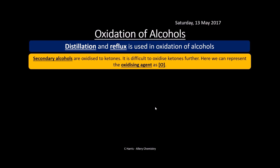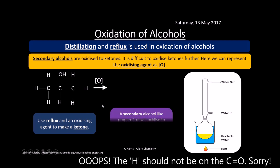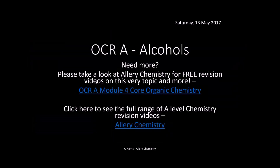Secondary alcohols are oxidized to ketones using reflux with acidified potassium dichromate (represented as [O]). Ketones are difficult to oxidize further, so only one product is formed. For example, propan-2-ol is oxidized to propanone. We use the reflux setup with our mild oxidizing agent represented with [O] in a square bracket.